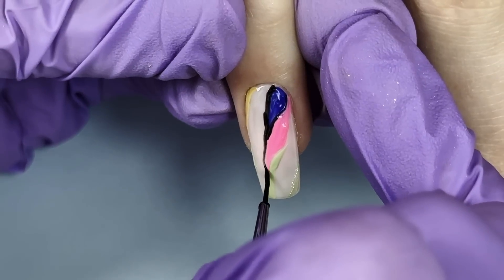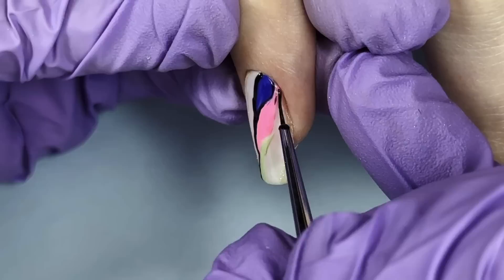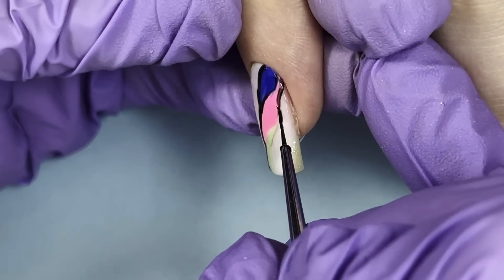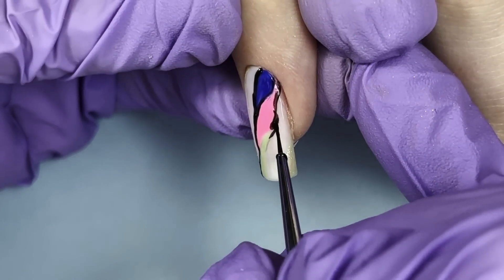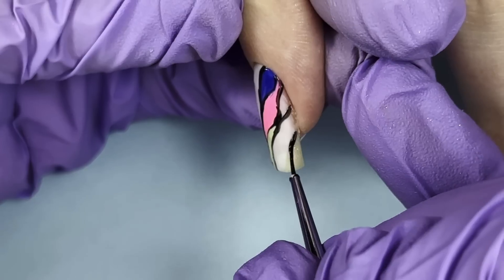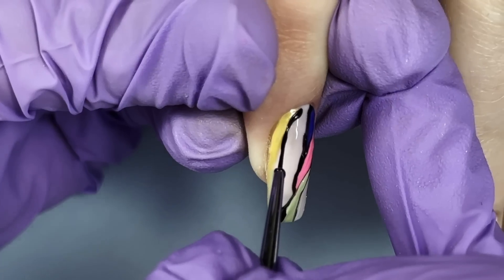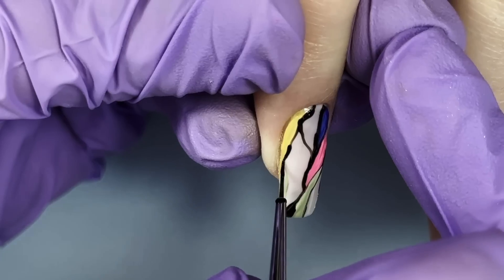If you apply too thick, especially dark colors such as this blue one, you may have trouble curing them and you may notice that the surface is wrinkly. So always make sure that you apply just a tiny bit, especially when dealing with black or any other dark colors.